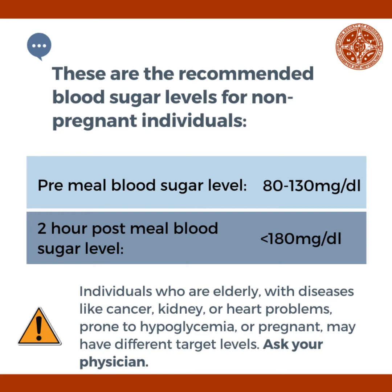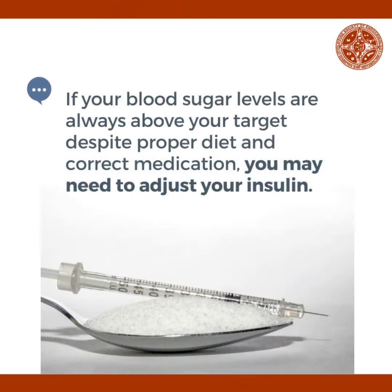Older individuals, those with diseases like cancer, kidney or heart problems, those prone to hypoglycemia, or pregnant individuals may have different target levels — ask your doctor about this. If your blood sugar levels are always above your target despite proper diet and correct medication, you may need to adjust your insulin.